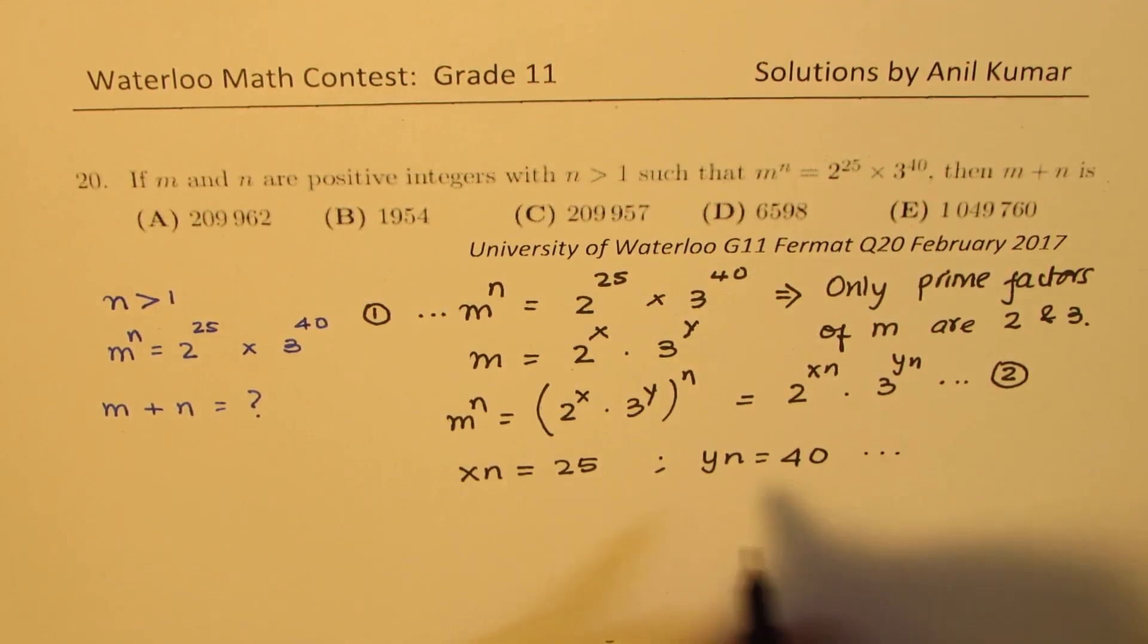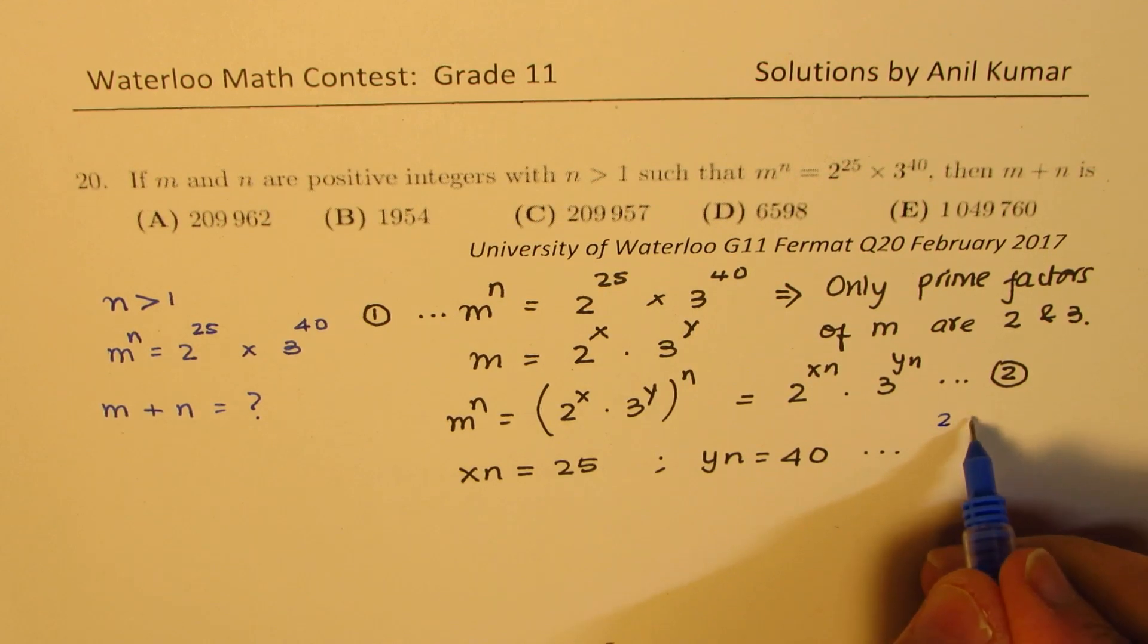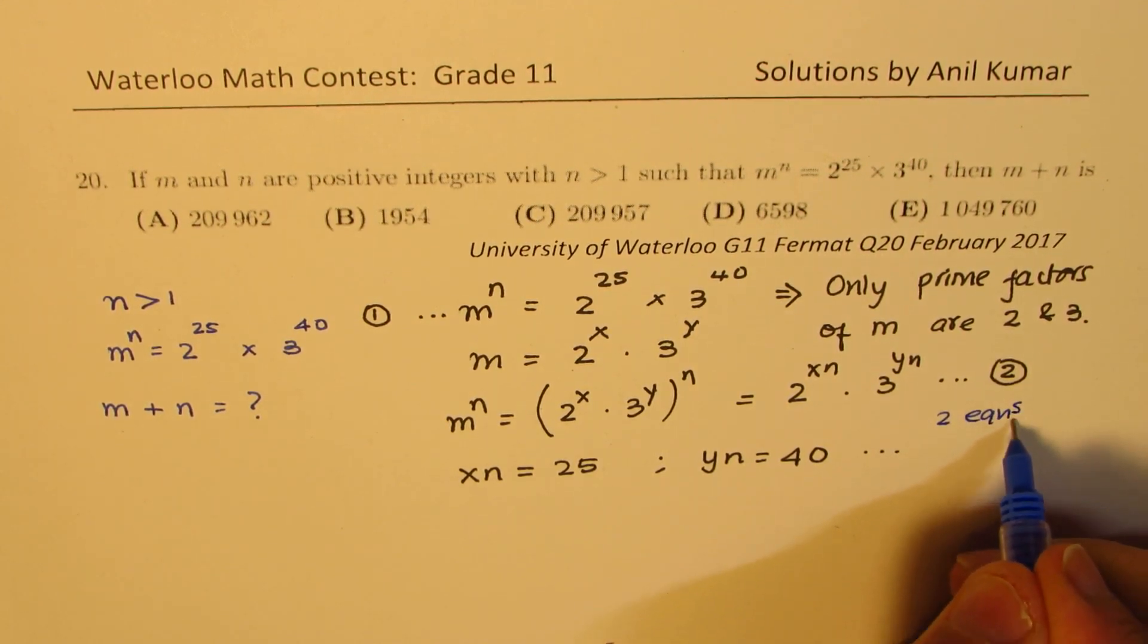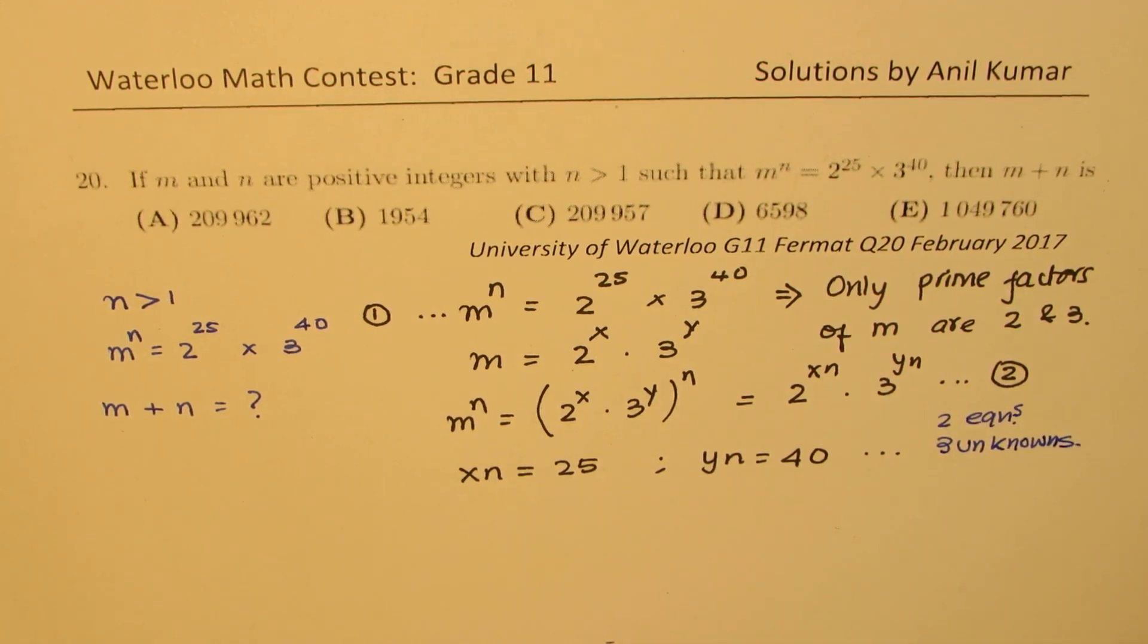So now, you notice that we have two equations but three unknowns. The question here is that we have two equations and three unknowns, so that means you have to do some guess and check or some other conditions you need to figure out to find the three unknowns.